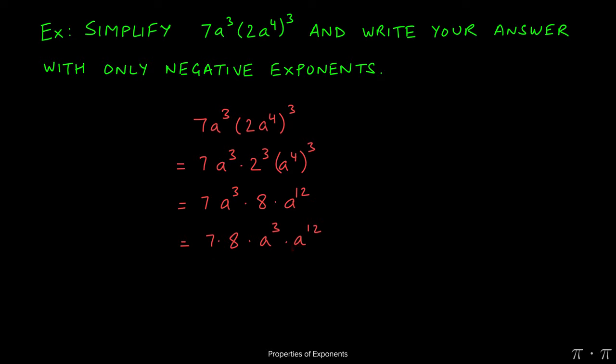7 times 8 will give us 56 and a cubed times a to the twelfth will give us a to the fifteenth. When bases are same and we're multiplying we add the exponents by the product rule.